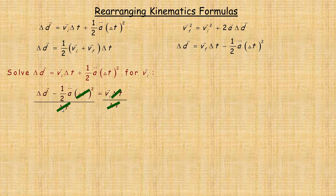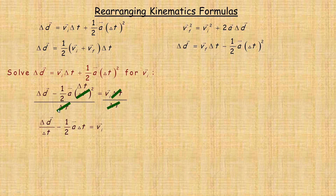This delta t is actually divided into both parts. The delta t goes into the delta t squared, leaving a delta t — so there's still minus a half a delta t there. This delta d is still over the delta t. So we could write: initial velocity equals delta d over delta t minus a half a delta t. That's one way to write it. Remember that when we divided the left side by delta t, it's divided into both parts — that's why it's still there.